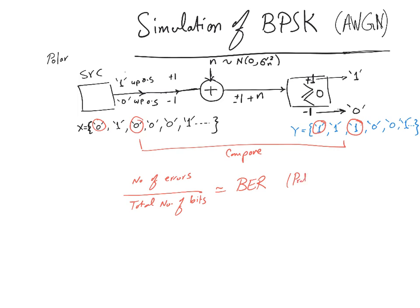The number of errors divided by the total number of bits gives a good approximation of the bit error rate — the probability of error. That's how we simulate the BER of a BPSK system as a function of signal-to-noise ratio. The next question is how to control the SNR for polar BPSK.